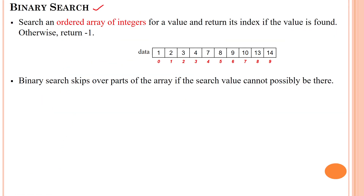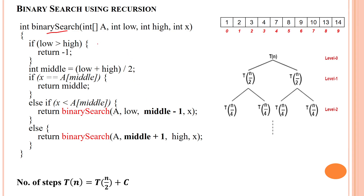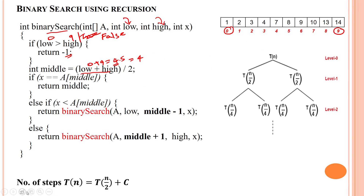Now we apply the divide and conquer approach to binary search to find whether a particular element is available in a given array. In binary search using recursion, we check the index values: low index is 0 and high index is 9. We check if 0 is greater than 9 — it is false, so we proceed to calculate the middle element: (0 + 9) / 2 = 4.5, and taking the floor gives us middle index = 4.